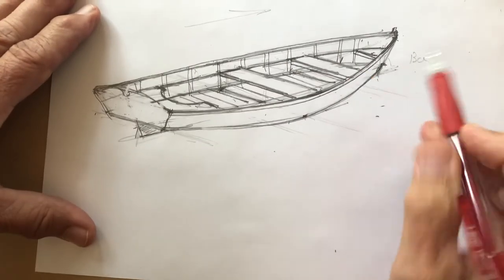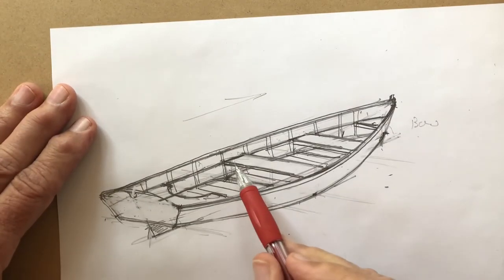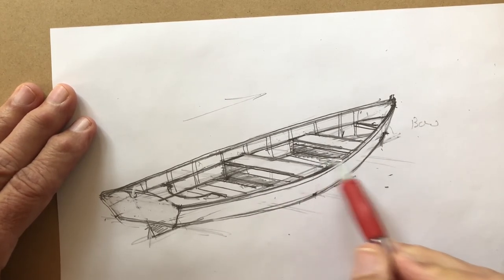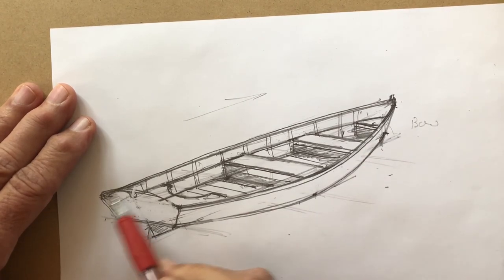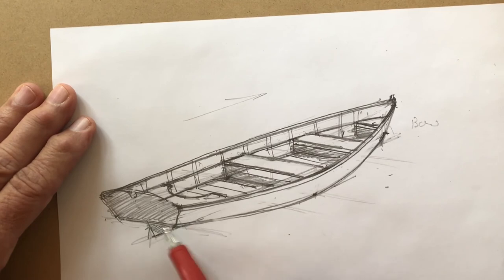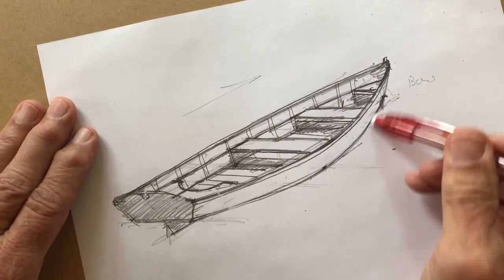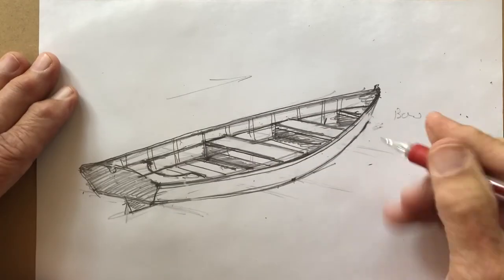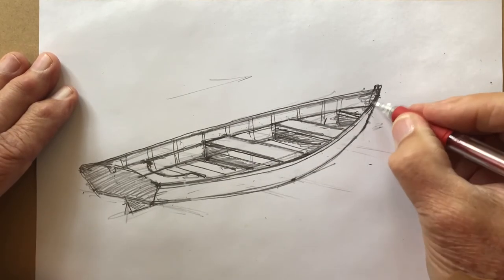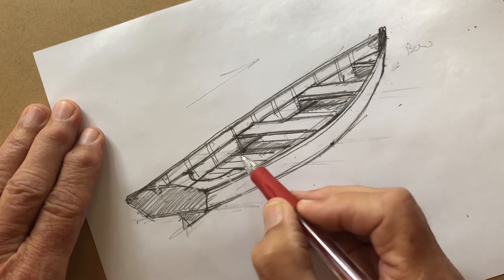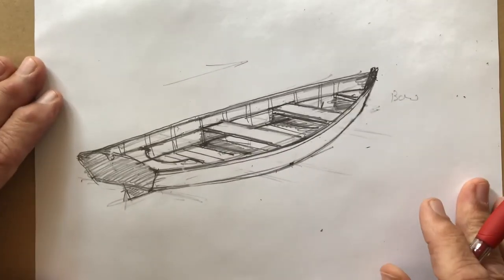And then finish it off any way you like. Add shadows. Maybe the shadow come from almost directly above, so these will cast shadows right straight down. That's another whole video, how you would handle the shadows of this. There you have it. A skiff.